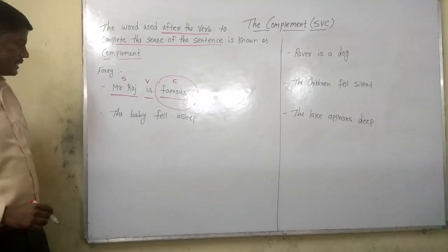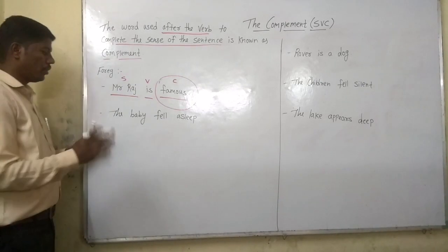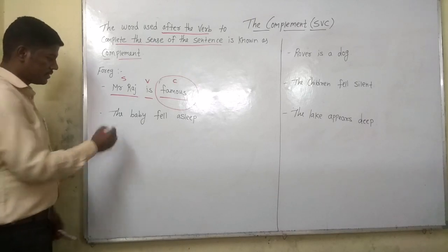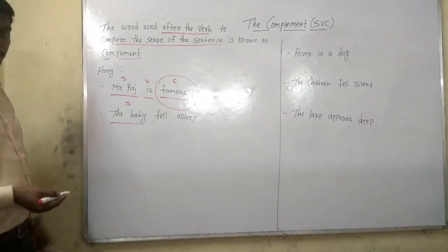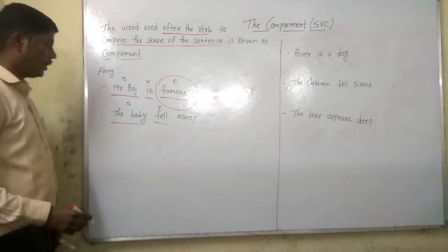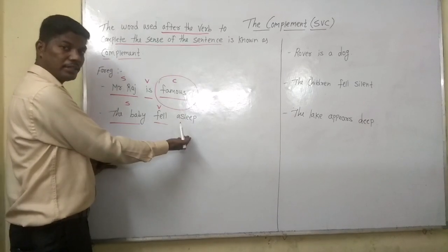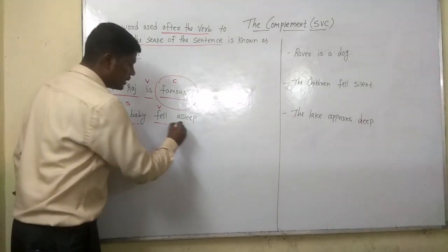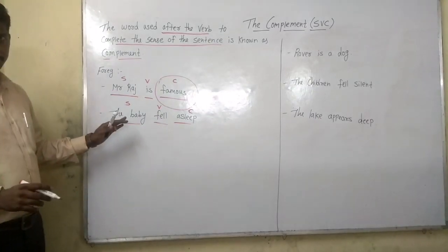Now see the next example: 'The baby fell asleep.' The doer of the sentence is 'the baby' — that is the subject. 'Fell' is the verb, the action word. Now to complete the sentence, after the verb we have the word 'asleep.' So here 'asleep' is the complement. Understood?